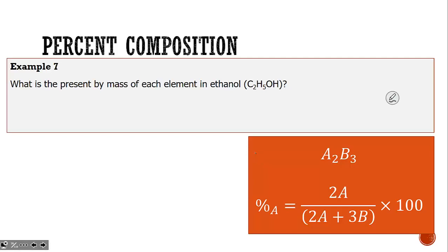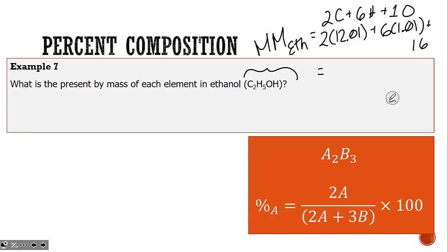To find the percent carbon in ethanol, first we need the molar mass. We add up all elements present: two carbons, six hydrogens, and one oxygen. Carbon is 12.01 grams per mole, hydrogen is 1.01, and oxygen is 16. In total, we end up with a molar mass of 46.08 grams per mole.